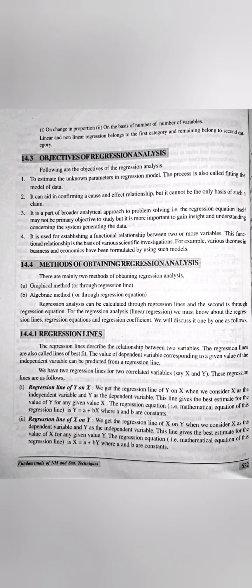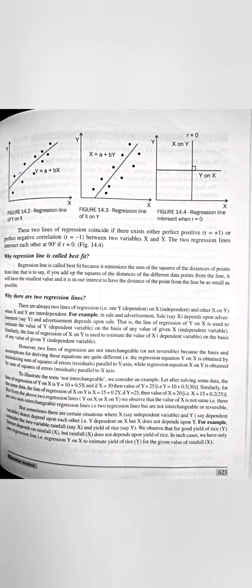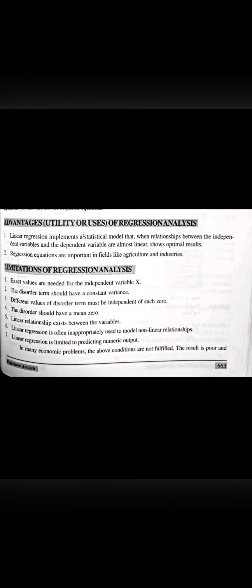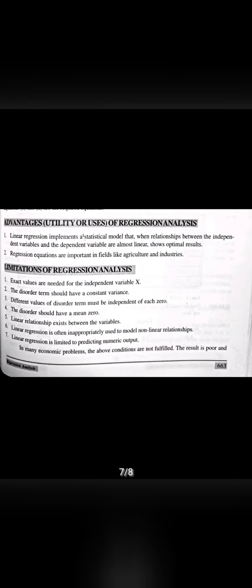Then what are Regression Lines? There are two regression lines: Y on X and X on Y. Then the method of least squares — you can study this from here as well as from the videos already explained. This is a very, very important topic. Then what are the advantages and limitations of Regression Analysis? So this was all about Regression Analysis.